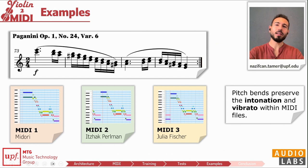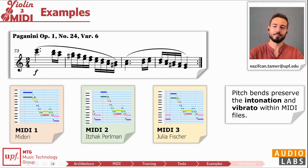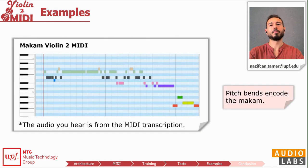Before finishing, I'd like to show some examples of how the model encodes performance details inside the MIDI. Here you see a passage from the famous Paganini Caprices, performed by three great violinists. Even these famous musicians disagree in their choice of the third intervals — let's hear these subtle differences in the encoded MIDI. The details of other music traditions can also be preserved. Let's hear how this violin taksim in Kürdi makamı was transcribed into MIDI.